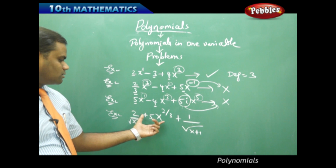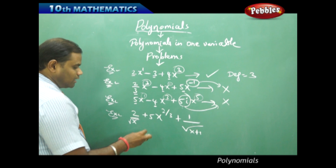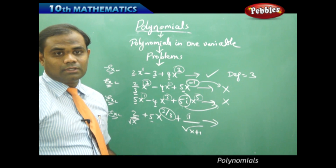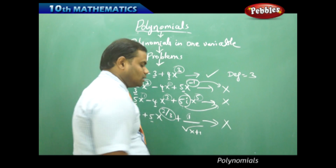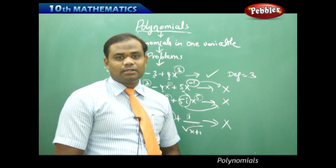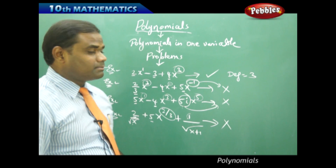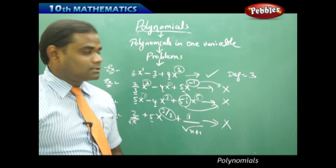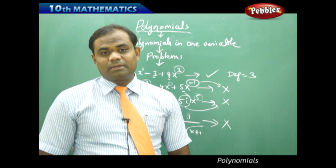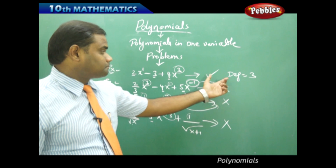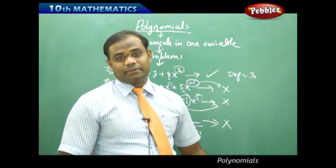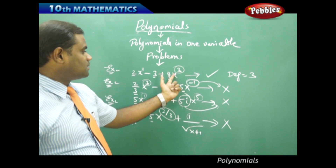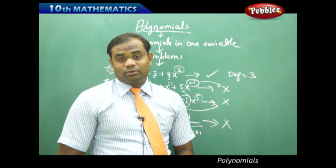This expression is also not a polynomial. Although the coefficients are real and the powers are non-negative, the powers are fractional. Fractional powers do not make the expression a polynomial. So, as we work through these examples, we see that some algebraic expressions are polynomials and some are not, based on two key conditions: the coefficients must be real, and the powers of the variable must be non-negative integers. The degree of a polynomial is the highest power to which the variable is raised — in the valid example, the highest power is 3, so it is a degree 3 or cubic polynomial.